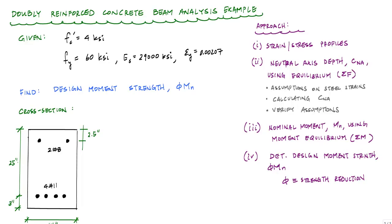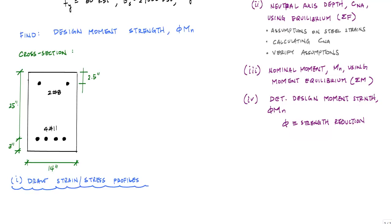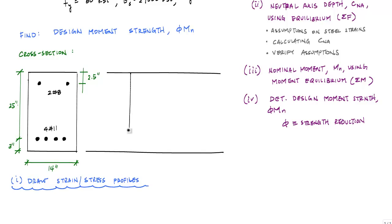Now let's go ahead and do it. The first thing we want to do is draw the strain and stress profile. I like to draw horizontal lines across — get your straight edge, because that's the way it should be done. My first vertical line represents the strain profile, and the next one represents the stress or force profile. The strain profile is always linear.